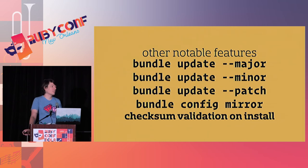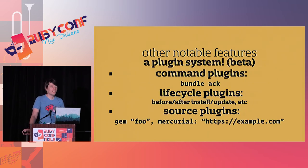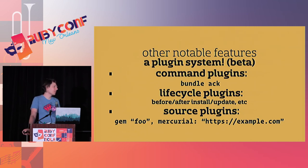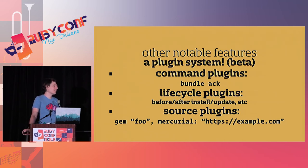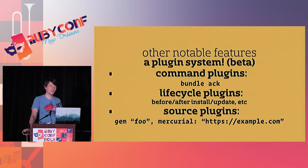Can you tell that once we started having funding we started developing a little bit faster? We shipped a plugin system in beta that lets you build command plugins like new bundle commands in their own standalone gems, lifecycle plugins — for example, generating ctags from gems in your bundle as you install them — and source plugins. In theory, you could build a gem that lets you install bundles from Mercurial repositories. I don't know of anyone who wants to do that, but it could be you.